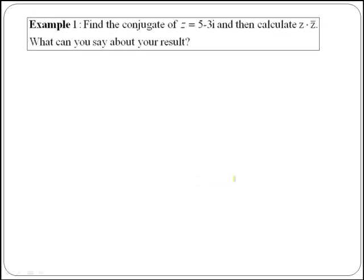Let's do the following example which says: find the conjugate of z which is equal to five minus three i, and then calculate z by its conjugate. What can you say about your result?